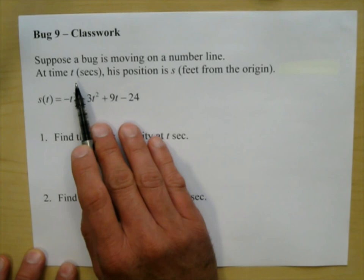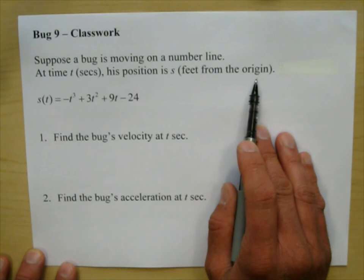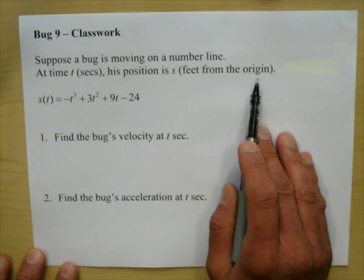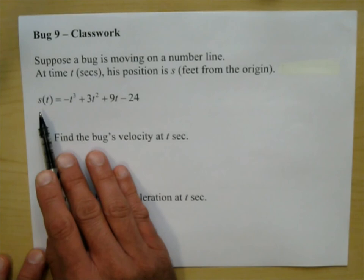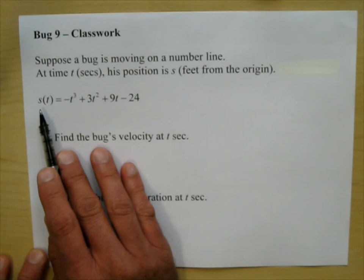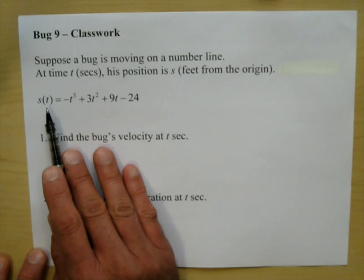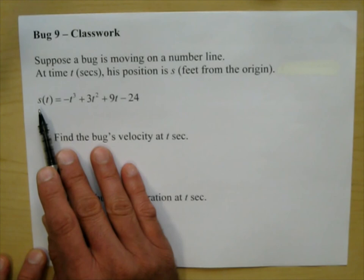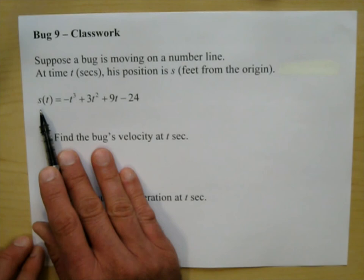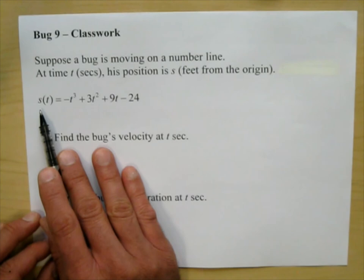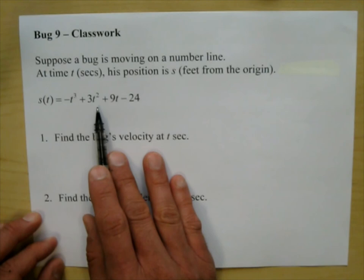Suppose a bug is moving on a number line. At time t seconds, his position is s feet from the origin. We're going to do something a little different with Bug 9. Instead of calling the function f, we're going to call it s this time. I was calling it f up till now because we were learning how to do the derivative and I didn't want to start off by saying s instead of f, which would have been more confusing with the difference quotient.